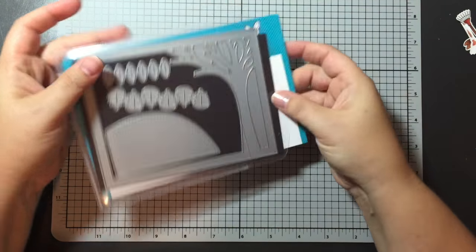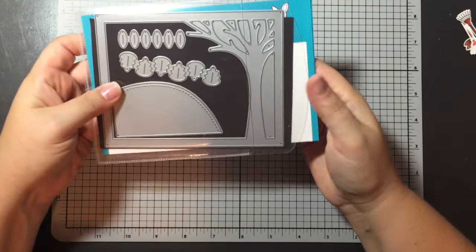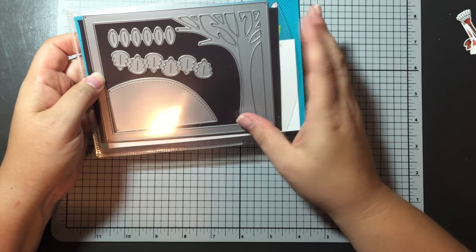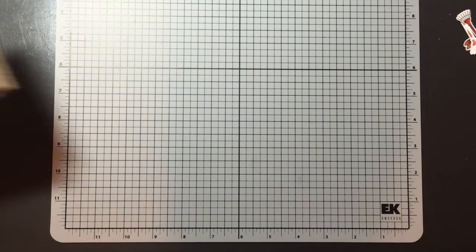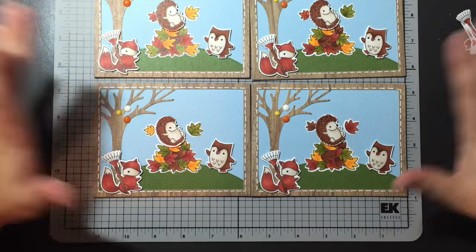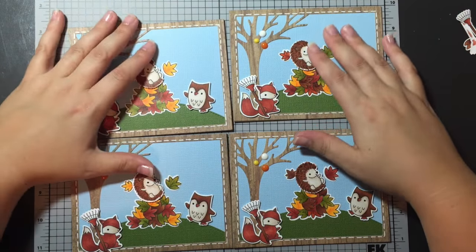And then I also used the leafy tree backdrop in the landscape version for these cards. So just by itself to frame off the front of my cards. They turned out super cute. I'm so happy with them. I have four of them. They're the same except for the sentiments on the insides.